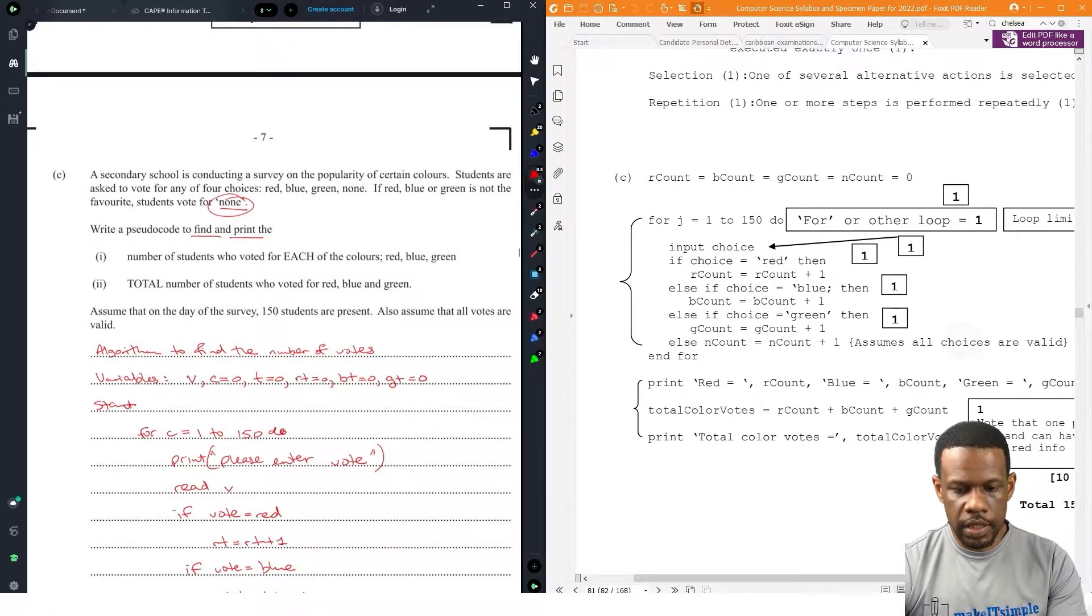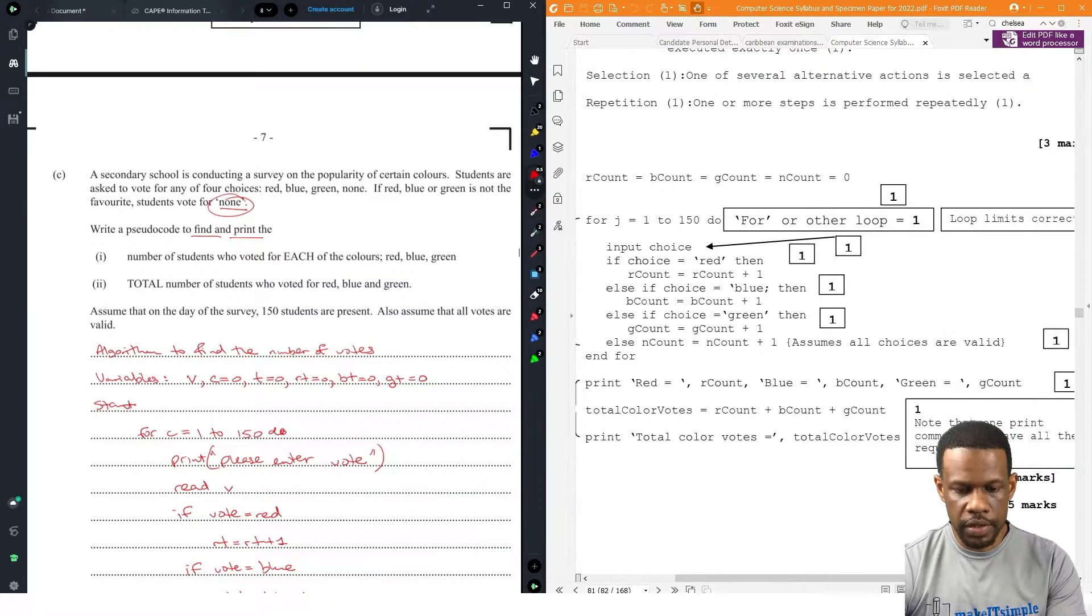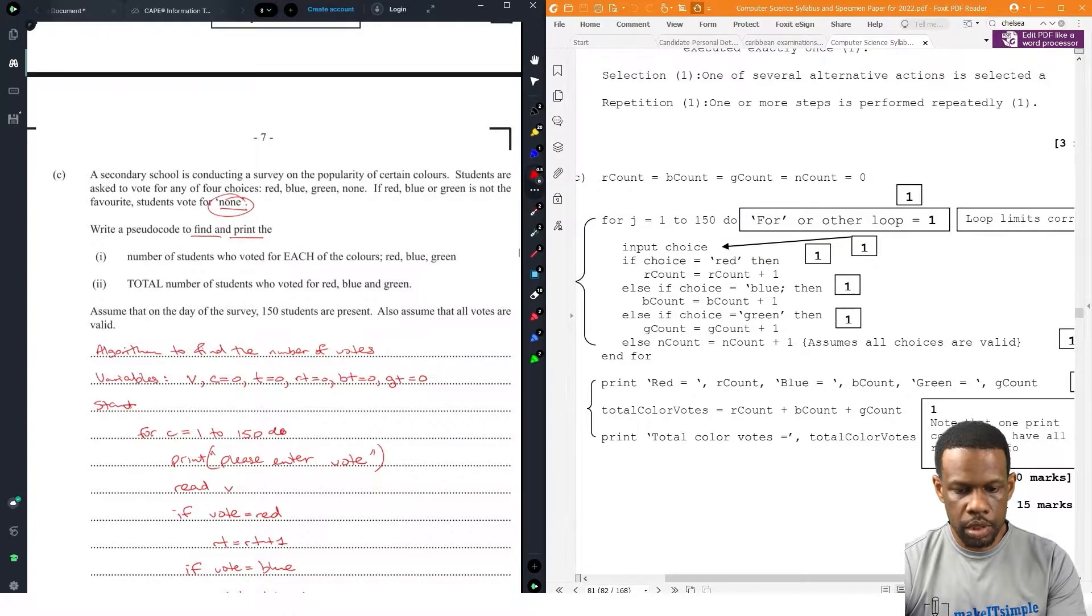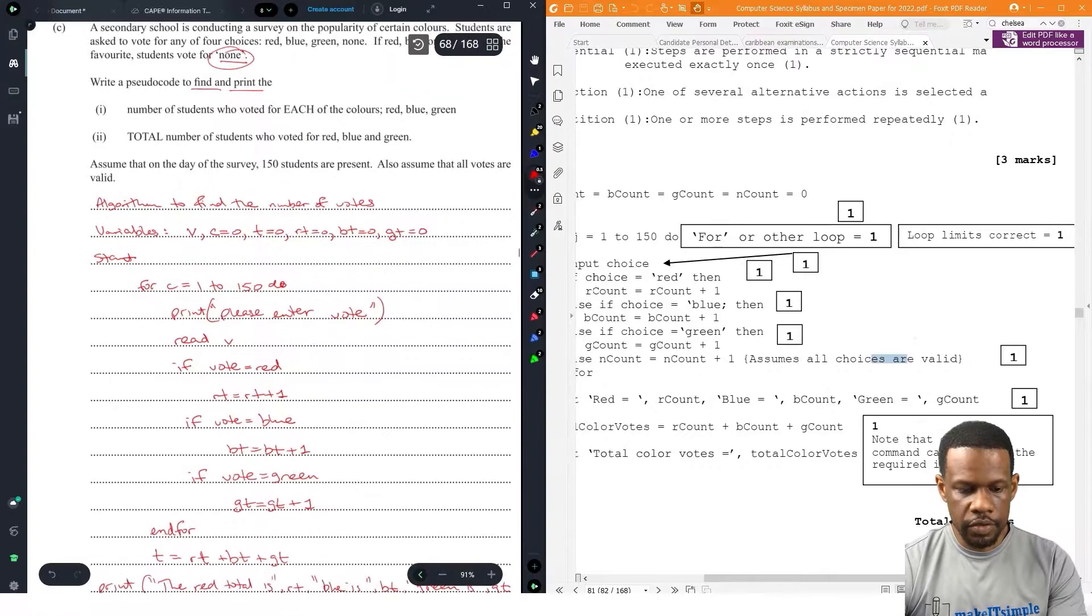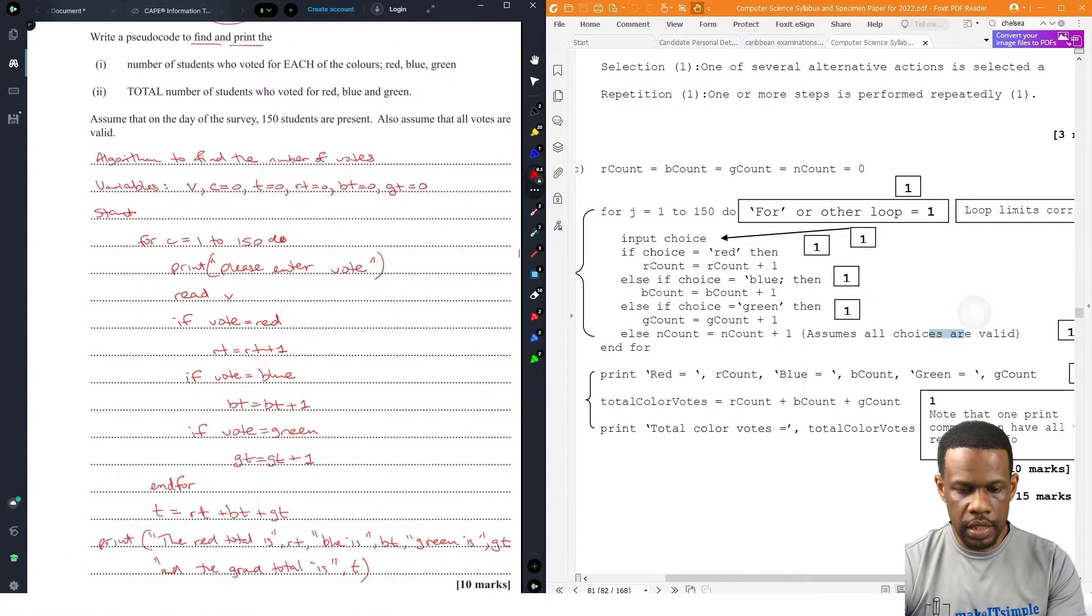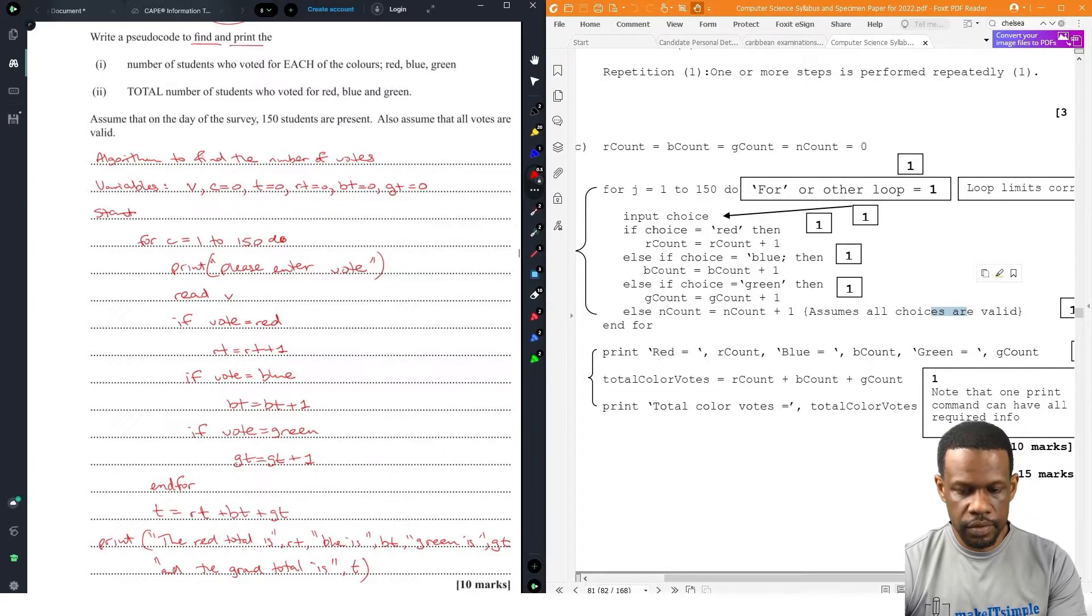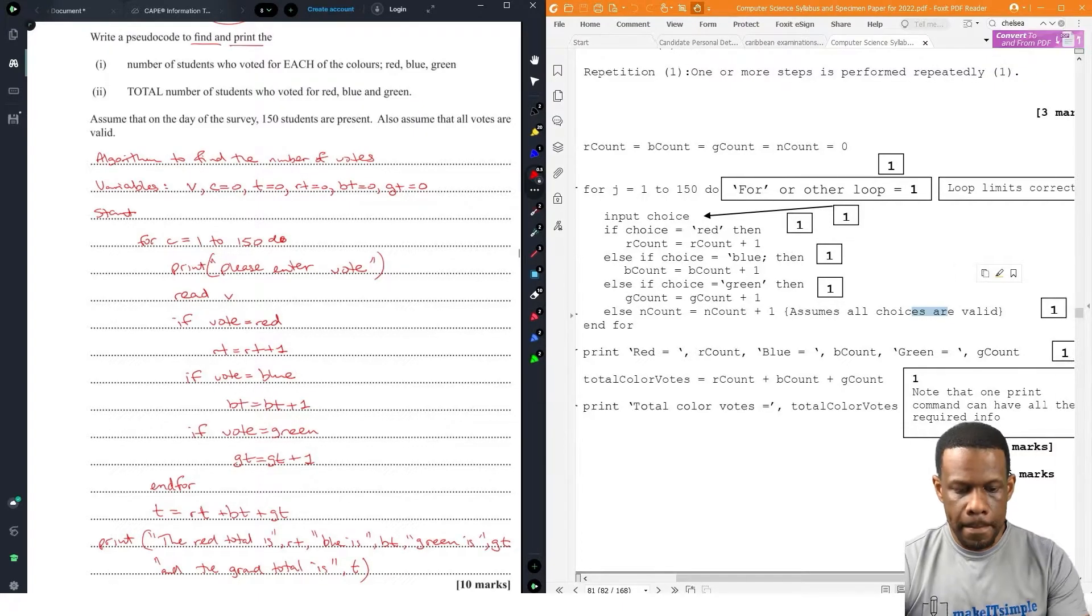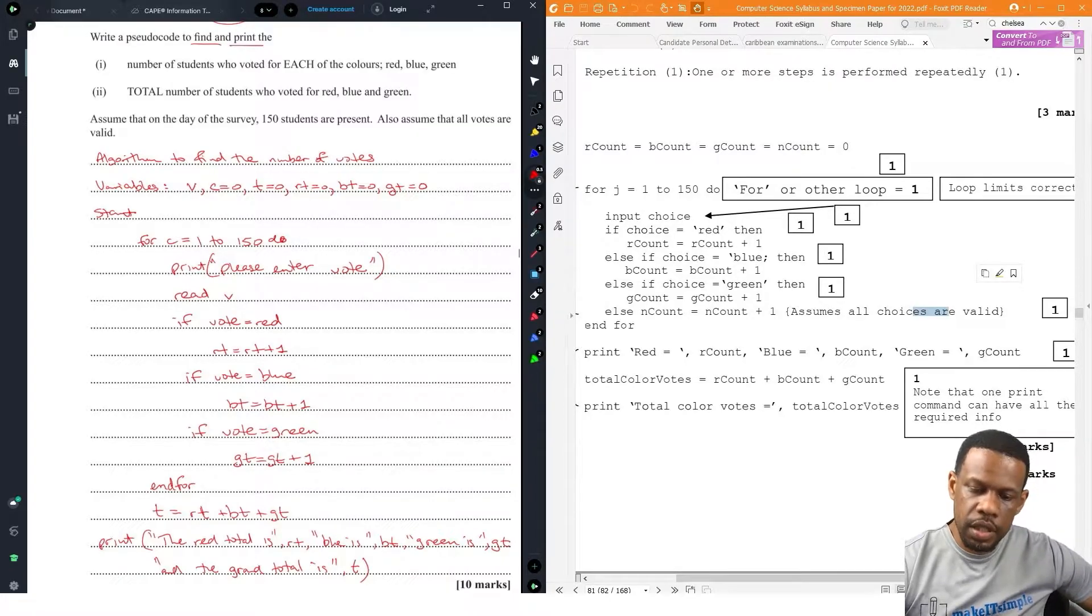Okay. Alright. So they did declare R count, B count, G count, and N count as zero. So that's one mark for that. You have your for loop. They didn't declare the J though. Anyhow. Alright. So I'd say you have the for loop. That's good. You get the choice. And then, for each one of them, they have Elsif.